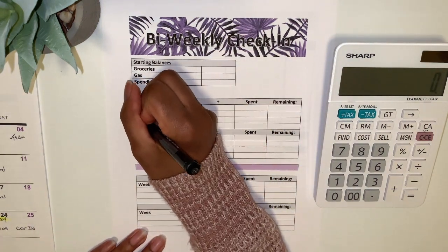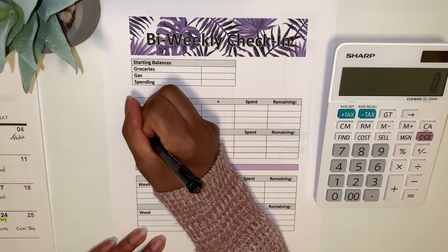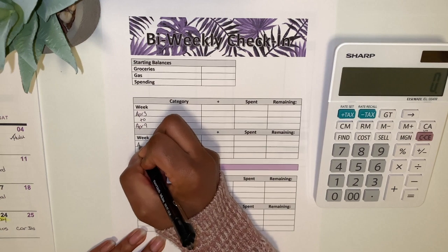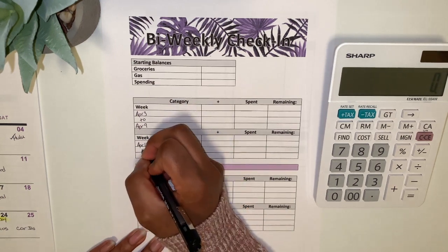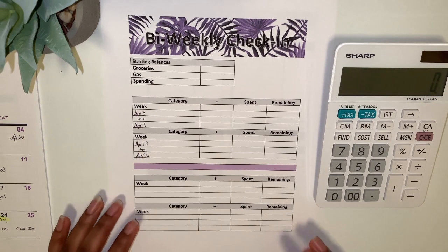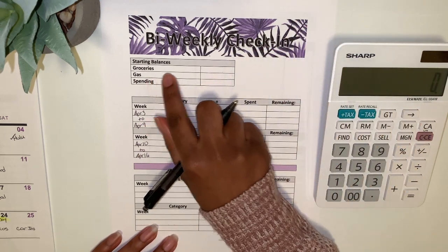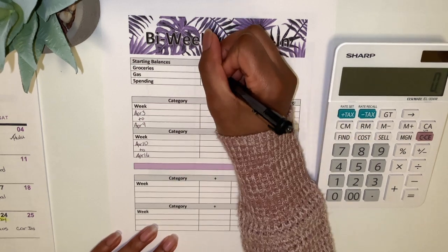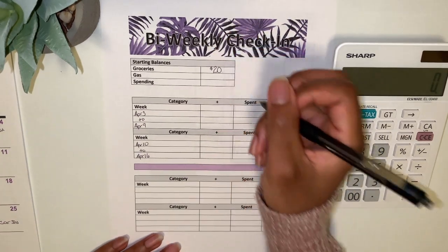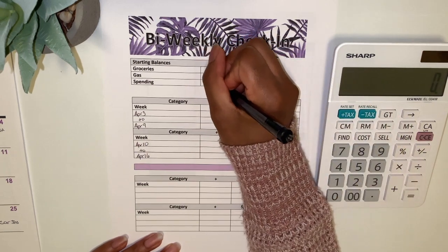Right here for week one, as I said, this is going to be for April 3rd to April 9th. And then week two is going to be April 10th until April 16th. My starting balance at the beginning of this month: for groceries I had in my envelope $20, and I just wrote this down because I wasn't making videos at this point, I was just keeping track. Gas I had $30 and spending I had $15.